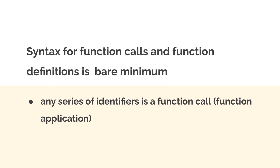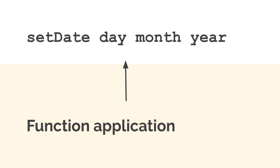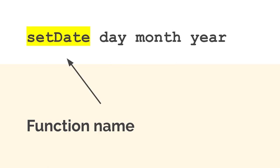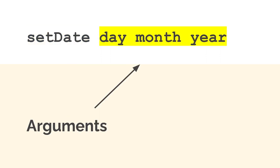The syntax for functions is the bare minimum in Haskell. Any series of identifiers is a function call or function application. Here's an example using a function called set_date. You call the function name first, then pass it the arguments it expects. To set the date, the function needs to know the day, month, and year — if you don't provide them the function can't run. The function name is written first, followed by the arguments.